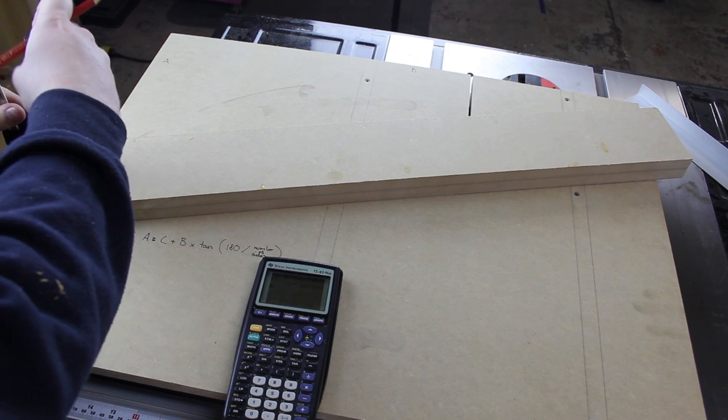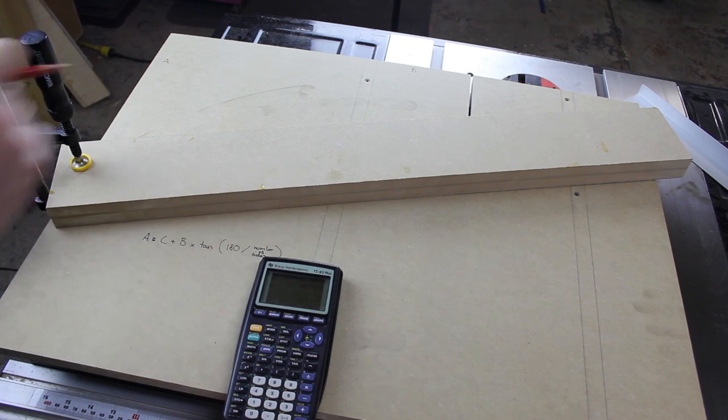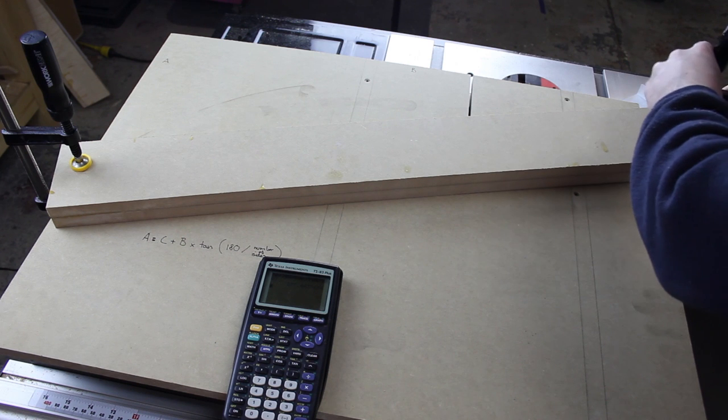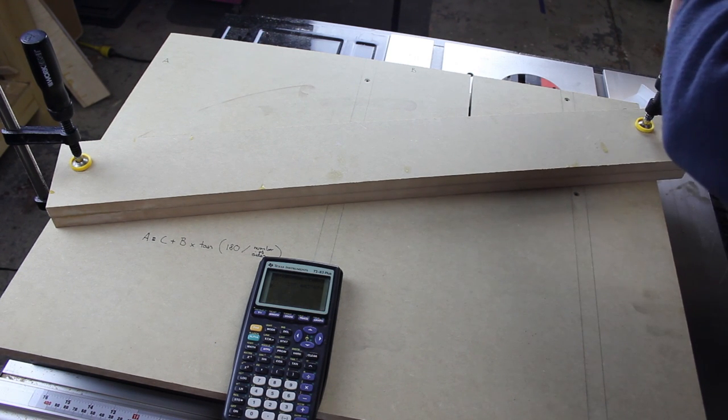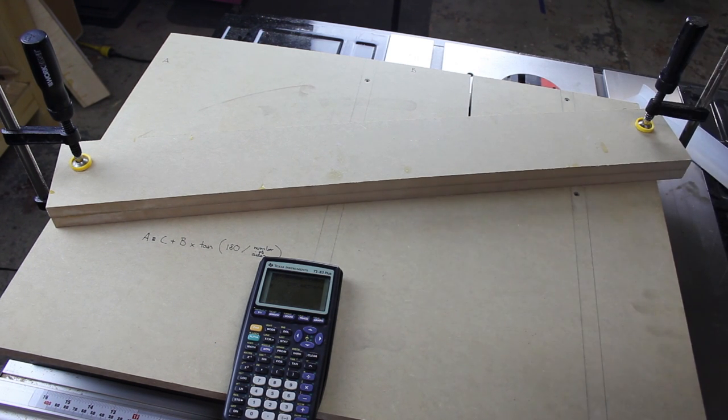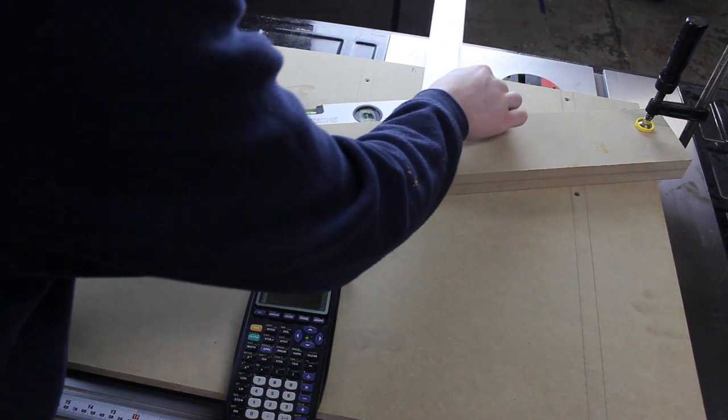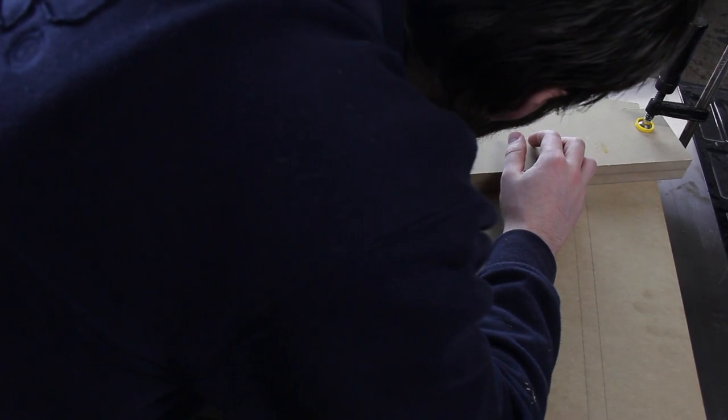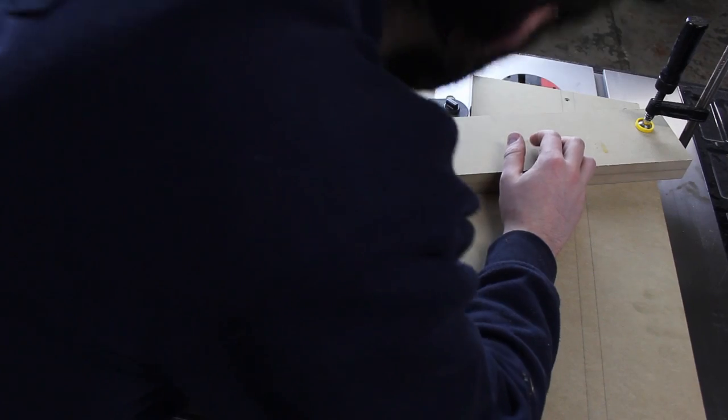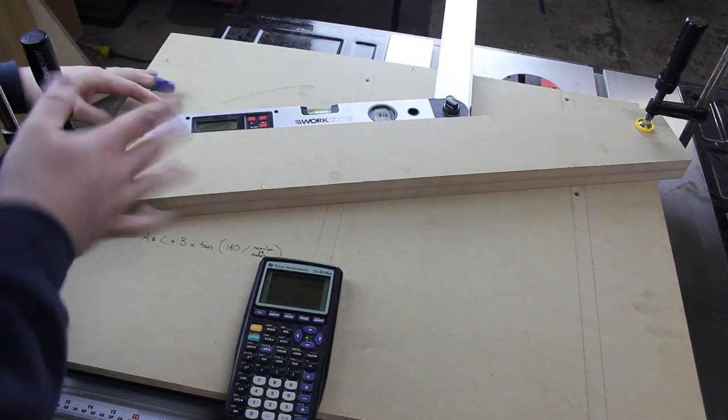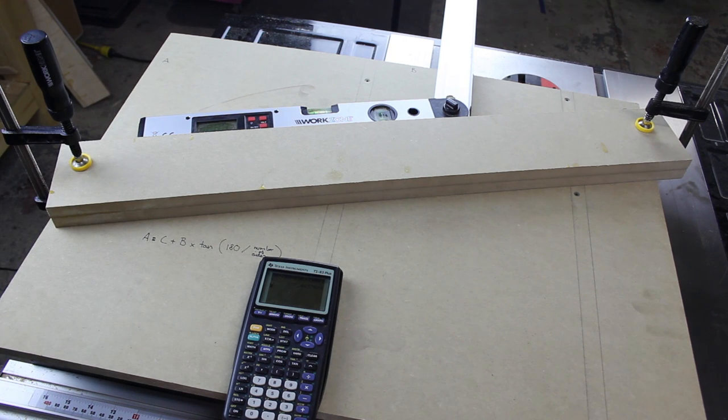I've got this raised up off the table saw just with some scraps so I can get the clamps on. Now in theory this should come to 18 degrees or it's going to be 108 degrees from this line. So checking with this against that kerf line I'm at 108.2, so I don't trust the accuracy of this so I'd give it 0.2 variance anyway.